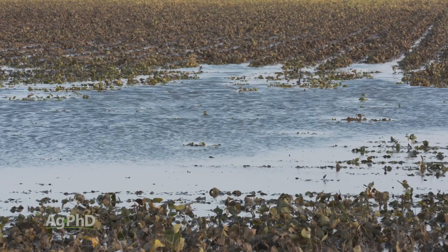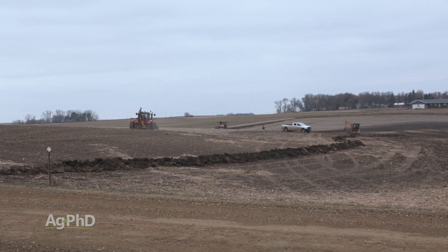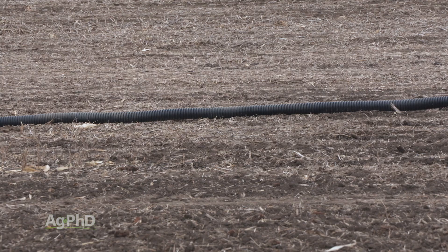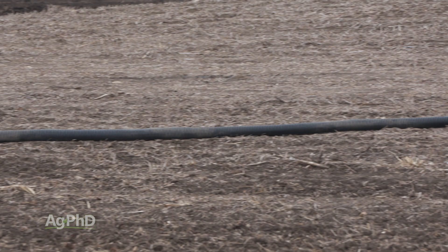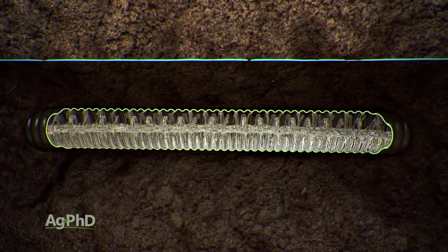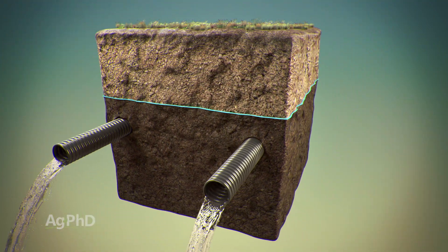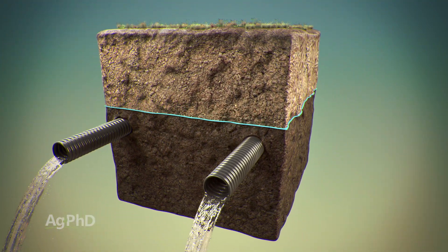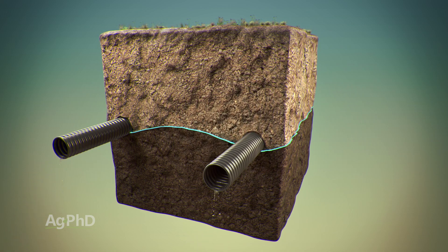When we talk about subsurface drainage, we're usually discussing tile, but there are other things that go along with that. Let's talk about what subsurface tile actually is, because sometimes you just see this hose getting laid out and wonder how the water actually gets into there. There are little perforations in that hose, or tile line as we call it — it's just a plastic piece that's down in the ground. The water can go in there and then quickly moves out of the soil.